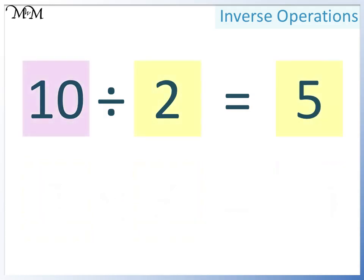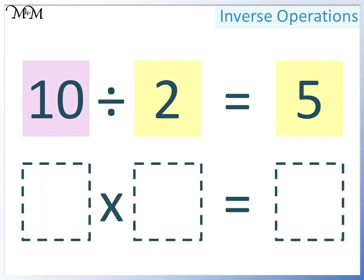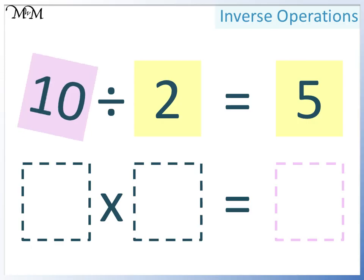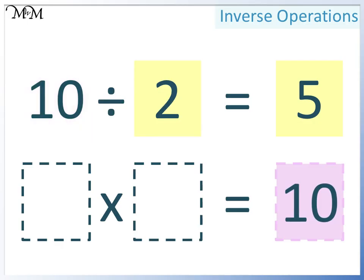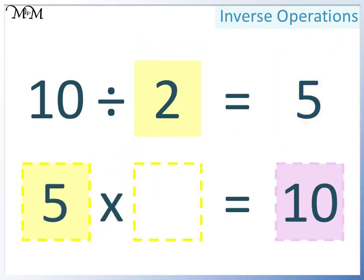There is another way that we can write this division as a multiplication. Again, two smaller numbers multiply together to equal a larger number. The largest number is 10, so it must go here. Either of the two smaller numbers can go here — this time we'll have 5. And so 2 must go here. 5 times 2 equals 10.